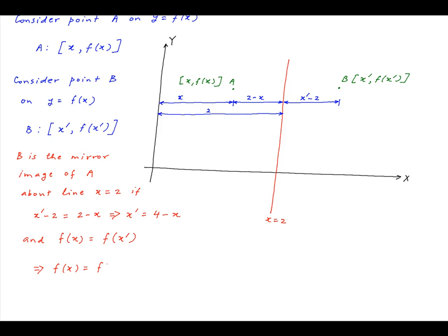Plugging in the value of x' obtained earlier, we get f(x) = f(4 - x). If we replace x with 2 + x, we get f(2 + x) = f(4 - (2 + x)).